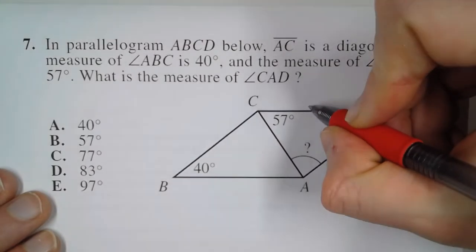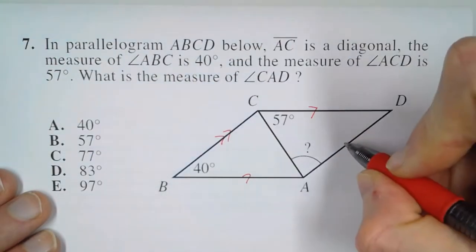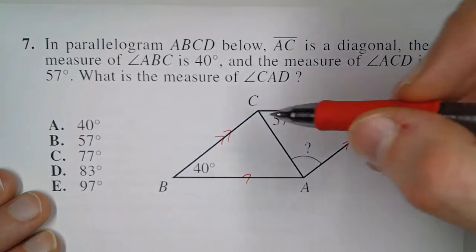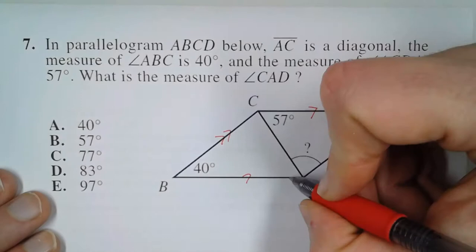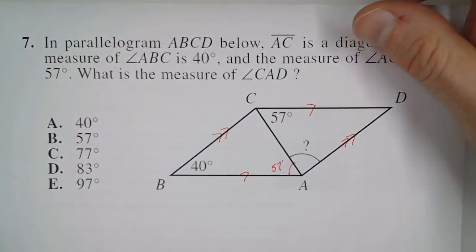Now the thing to remember is that this is a parallelogram, and they gave you that because we need to know that information. Because these two sets of lines are parallel, this angle is equal to this angle. Those are what we call alternate interior angles.